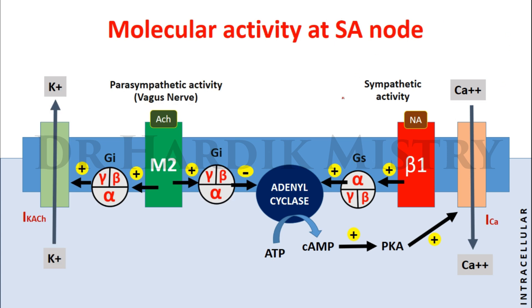The parasympathetic activity comes mainly from the right vagus nerve. When acetylcholine binds to the muscarinic M2 receptor, there are two events. In the first event, it stimulates the inhibitory G protein (Gi), which inhibits adenylyl cyclase, preventing conversion of ATP to cAMP — so there is no activation of protein kinase A and no opening of calcium channels, keeping calcium channels blocked.